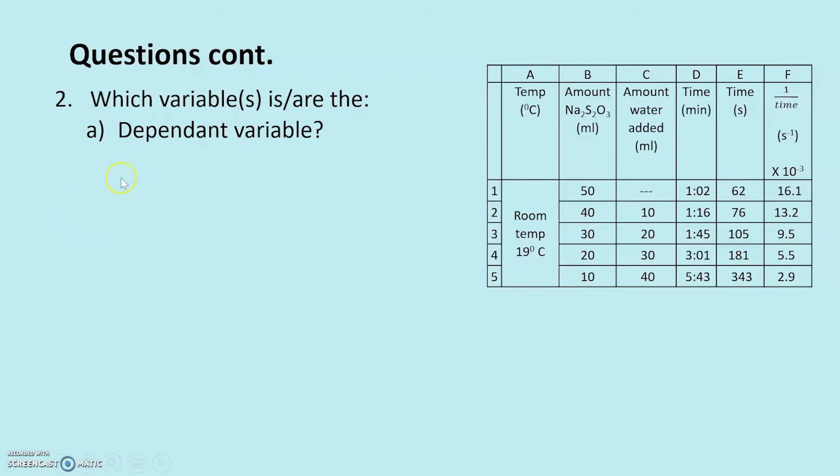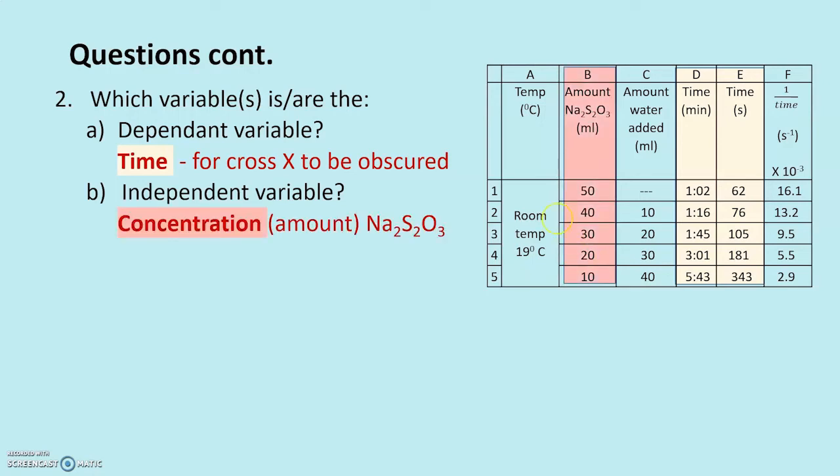Now to the variables, which is the dependent variable. Well, the time it took for the X to be obscured is dependent on the concentration. So the time is the dependent variable and the independent is the concentration, which in our case was the volume or amount of sodium thiosulfate.